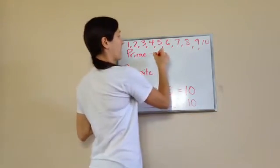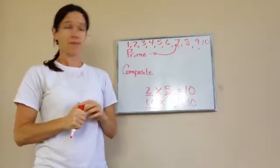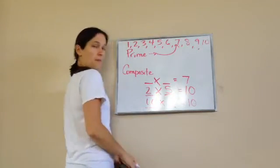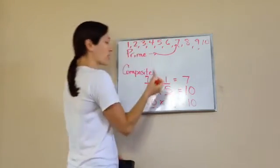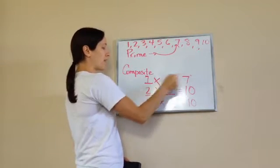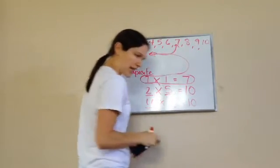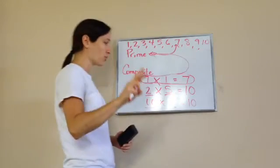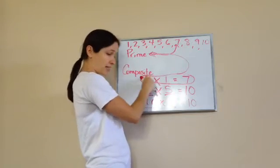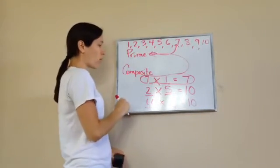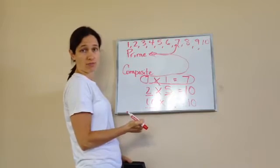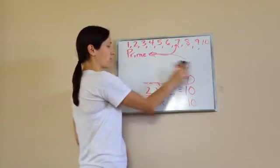Let me pick a prime number. A prime number would be like 7. Can you think of something times something equals 7? Just 7 times 1. So when you can only think of 7 times 1, or the number that you're working with times 1, then you know that that number is a prime number. The actual definition is: a prime number has exactly two factors — 1 and the number itself. And a composite number has 3 or more factors. As you can see, 10 has 1, 2, 3, 4 factors. So that's the difference between prime and composite.